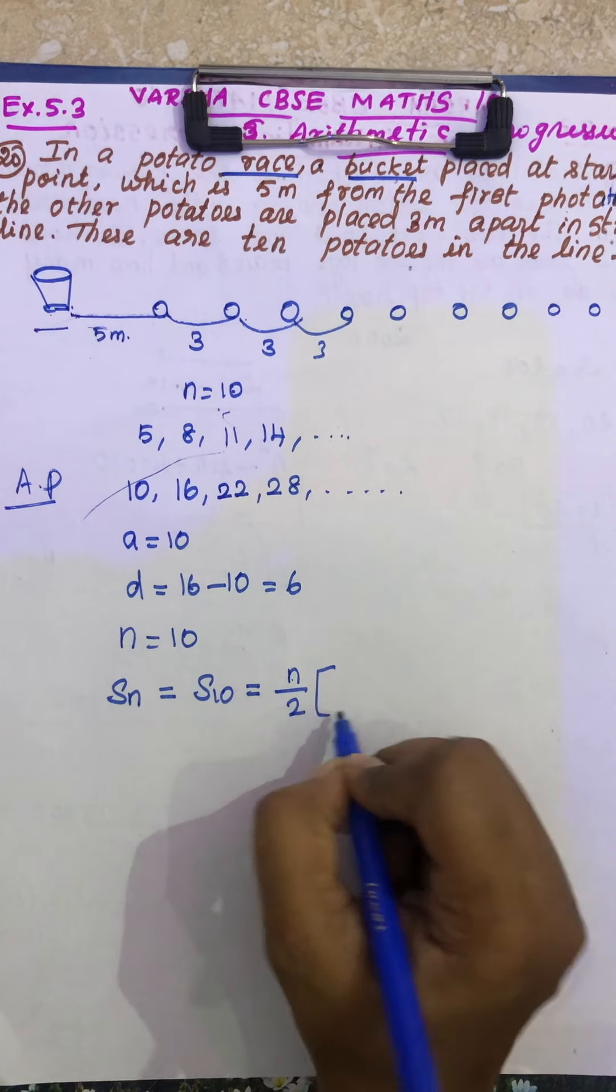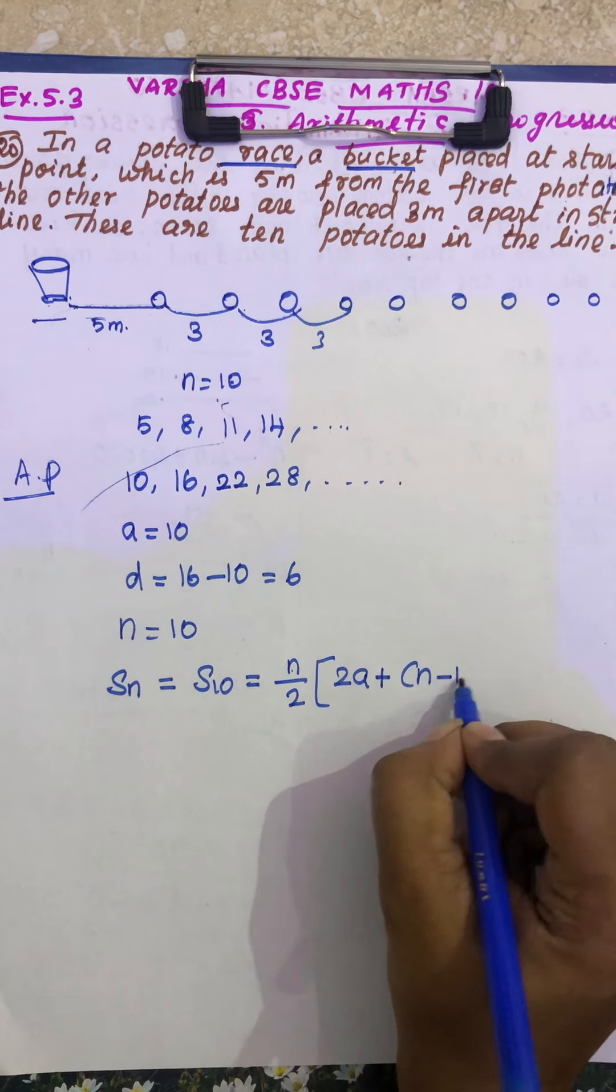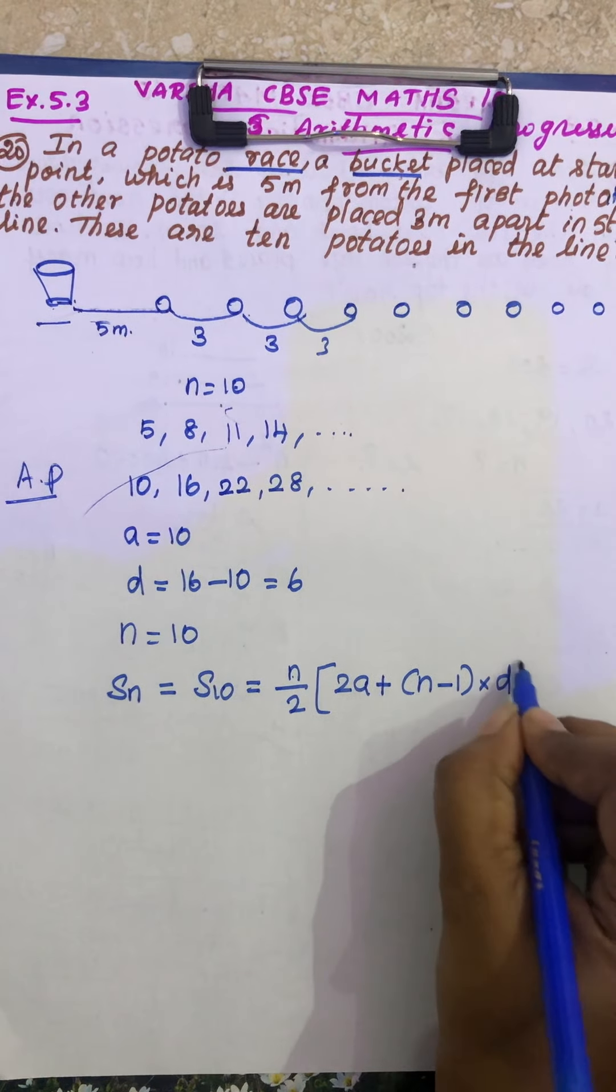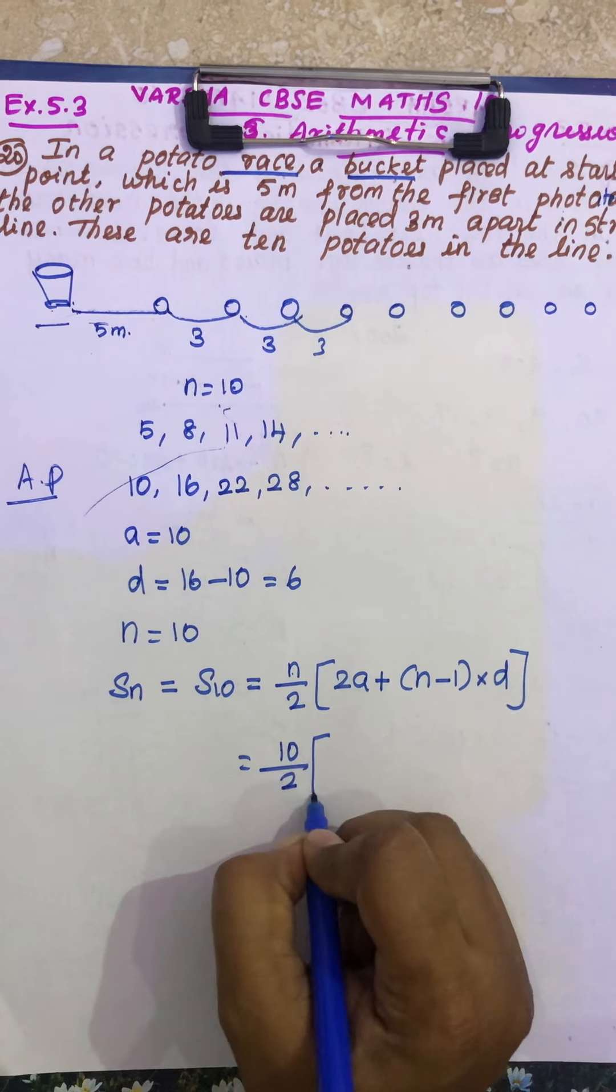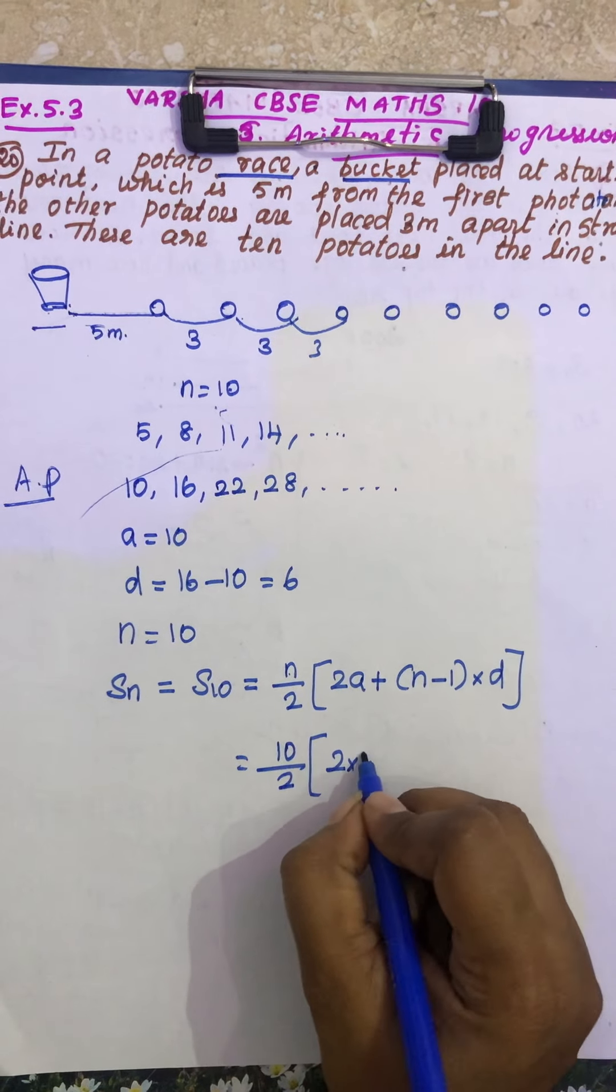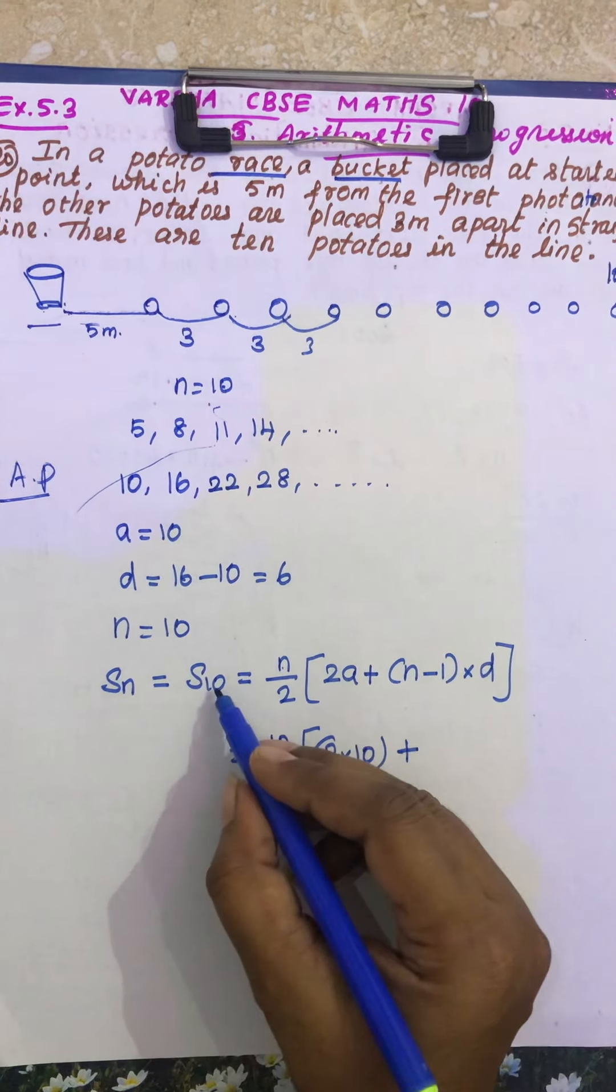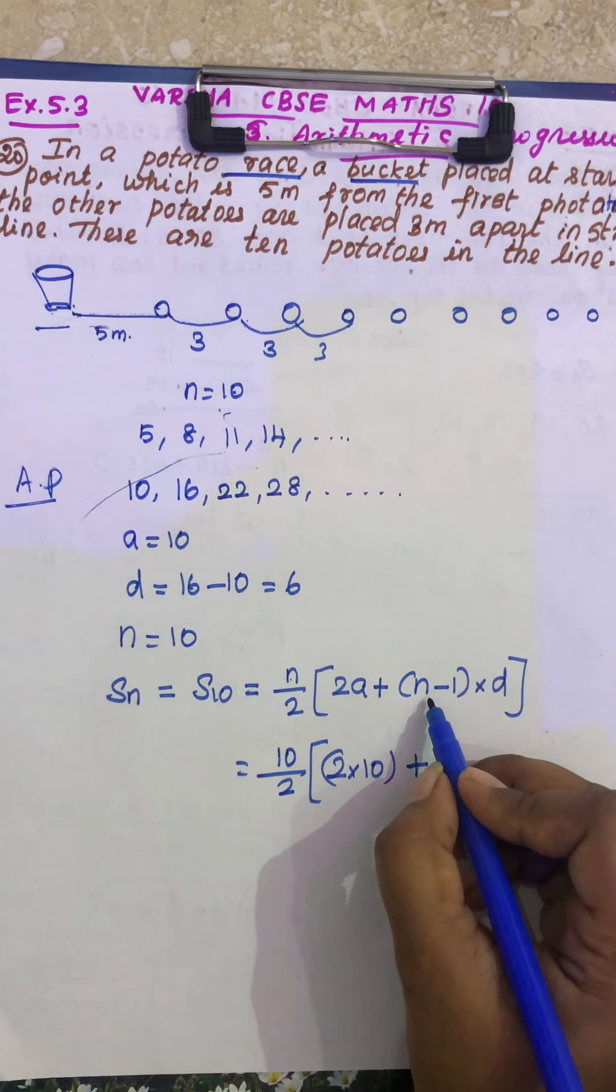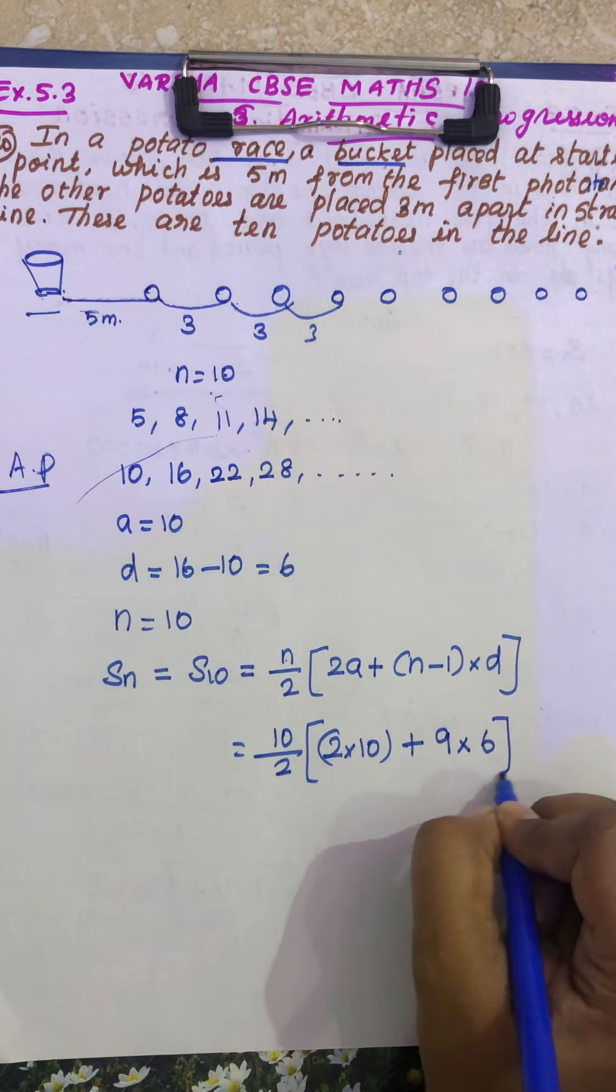So what is your formula, that is N by 2, 2A plus N minus 1 into D. See, this is 10 by 2, 2A, 2 into 10 plus, what is your N, that is 10, 10 minus 1 is 9 into D, D is 6.